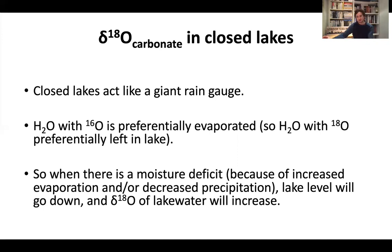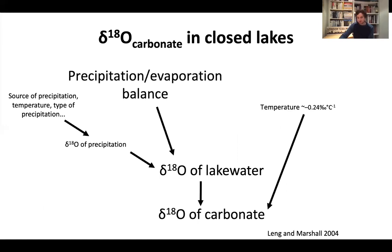In closed lakes, the effect of evaporation on delta-18O of lake water is usually far greater than the other influences on delta-18O, and far greater than the direct temperature effect as well. This modification within the lake — really meaning evaporation, so the precipitation-evaporation ratio — is the key driver of delta-18O in lake water and therefore delta-18O in carbonate, particularly in closed lakes.